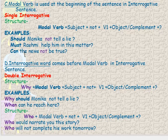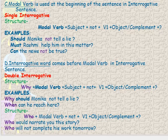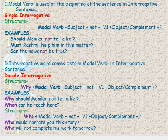Sentences are of two types: simple interrogative and WH-question. In WH-questions, the WH word comes first, followed by the modal verb, then the subject, verb, and object. For example: 'Why should Monika not tell you?' or 'When can he come?' Note that 'who' acts as the subject itself, so: 'Who will narrate you this story?' or 'Who will not complete your work tomorrow?'